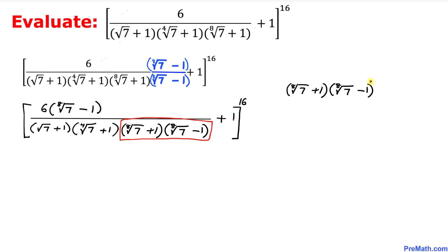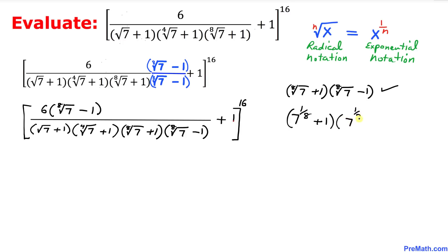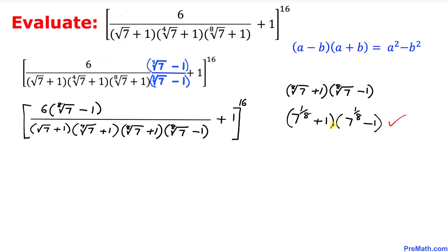In this next step, let's focus on these two factors in the denominator. Let's recall our radical notation: the nth root of x equals x to the power 1 over n, which is exponential notation. Therefore this problem could be written as 7 to the power 1/8 plus 1, times 7 to the power 1/8 minus 1.